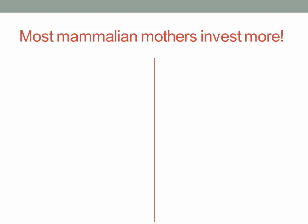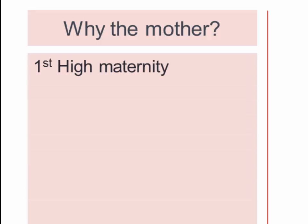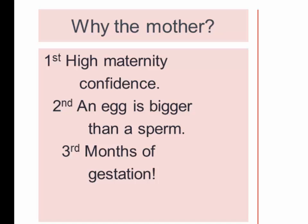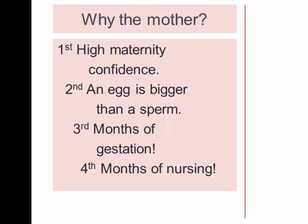In the majority of mammals, mothers invest more. If we ask why the mother, a series of arguments have been made. One is that you have much higher confidence if you're the mother that the offspring is genuinely your genetic offspring — maternity confidence is high. Secondly, an egg is bigger than a sperm, so from the very beginning you've made a bigger investment than the male. Then on top of that, there are months of gestation — in humans, nine months when that offspring is living in your body, imposing a cost on you. And that's followed by months of nursing, in some cases 36 or 48 months, with that offspring with you most of the time. That's a heavy investment on the part of mothers.